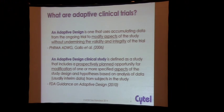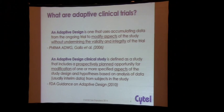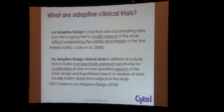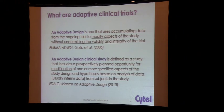The FDA added to this by saying that these designs had to be prospectively planned opportunities to modify the study design. Something to notice in these definitions, especially the FDA's definition, is that there's no talk about unblinded data versus blinded data. So actually, a lot of studies that we've been designing and running over the years that have made use of blinded data to change the trial are actually considered adaptive designs by the FDA and more broadly the industry now.